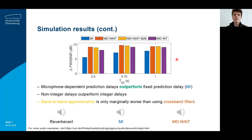This figure shows the average performance improvement in terms of frequency-weighted segmental SNR for the three reverberation times and the four considered algorithms — namely, in blue, the conventional WPE with a fixed prediction delay, and in red, yellow, and purple, the three proposed schemes for the microphone-dependent prediction delays. Additional performance metrics are included in the paper. We can first observe that the proposed microphone-dependent prediction delays outperform the use of a fixed prediction delay for all three reverberation times. Comparing between the three proposed schemes, we see that the use of non-integer delays outperforms the use of only integer delays. Furthermore, the band-to-band approximation performs only marginally worse than using cross-band filtering.